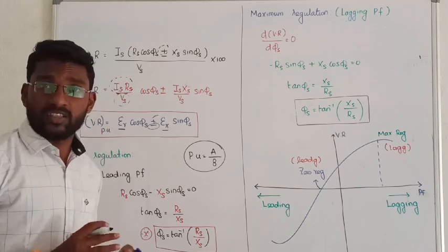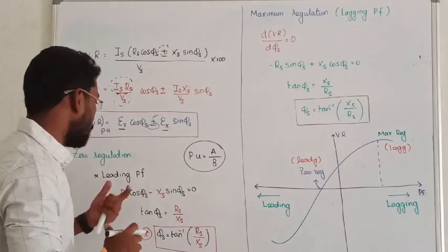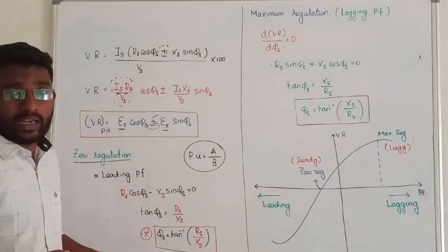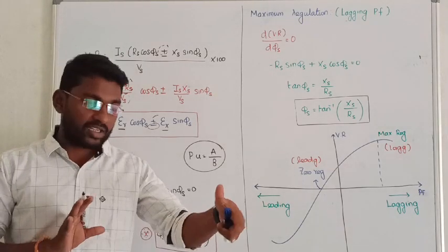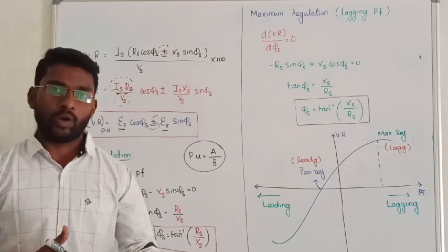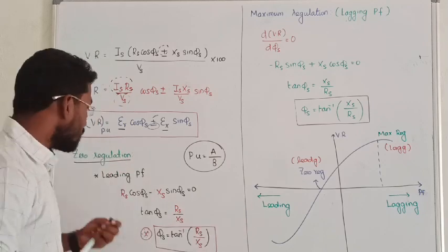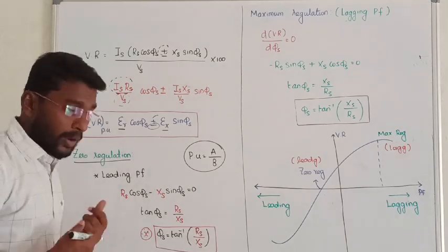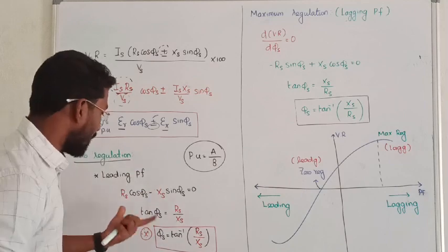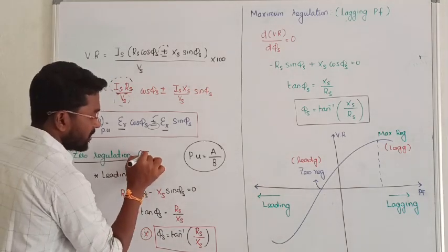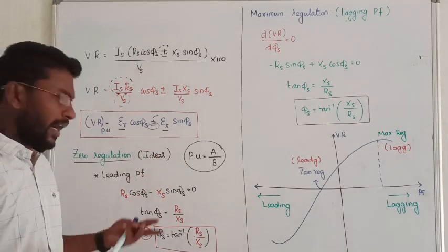Now, for a transformer the zero voltage regulation — what is the condition to obtain zero voltage regulation? Zero voltage regulation is practically not possible. Whether it is a transmission line, synchronous machine, or motor, you have to consider that the internal drop equals zero for zero voltage regulation to be possible. But practically, in all our conductors we have some resistive and reactive drop which is unavoidable. So the zero regulation condition is only possible for an ideal transformer, or we can consider it only theoretically.